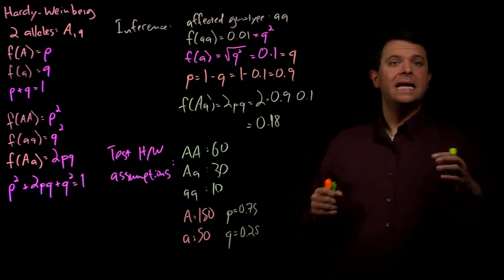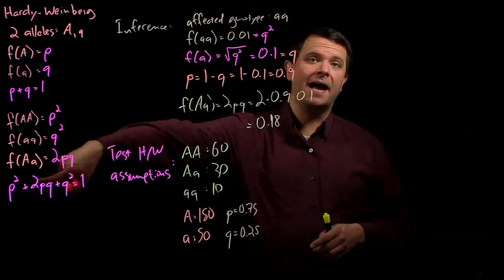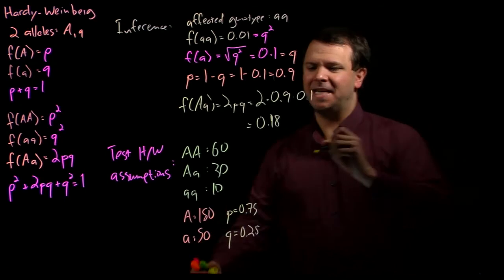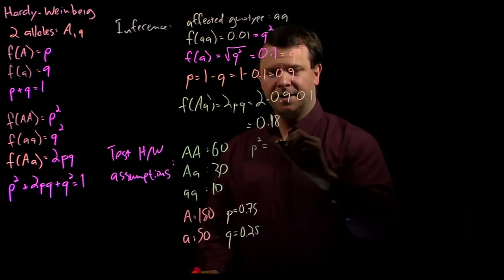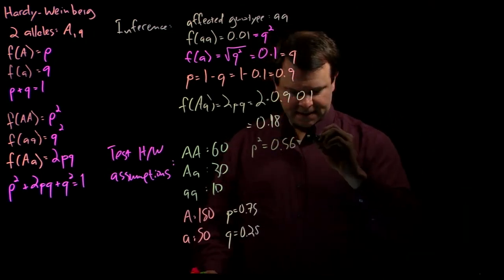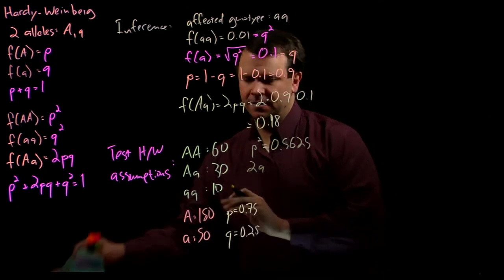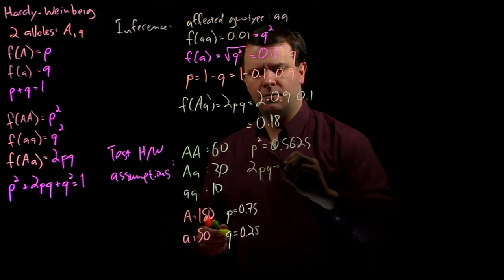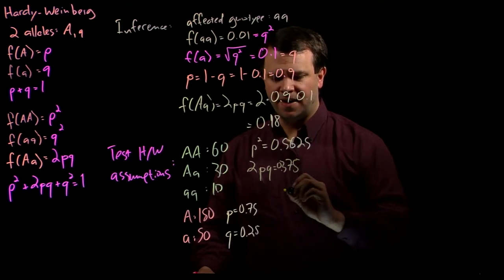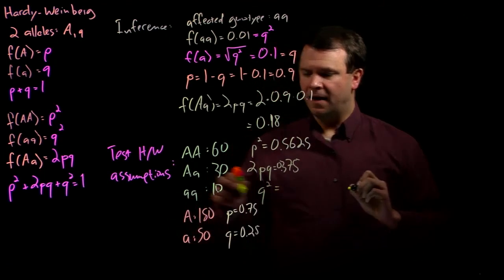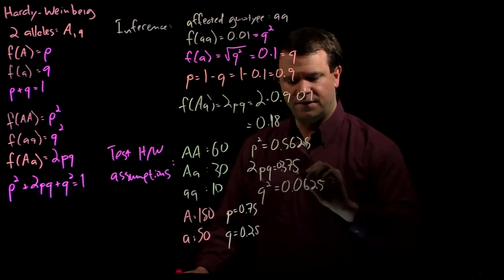And now, if this population is in Hardy-Weinberg equilibrium, I can determine the frequencies that I would expect to see. My expected frequency P squared is 56.25%. My expected frequency of the heterozygotes, which is 2pq, is 37.5%. And my expected frequency of the homozygote recessive little a little a is 6.25%.